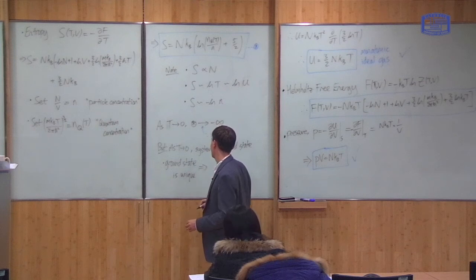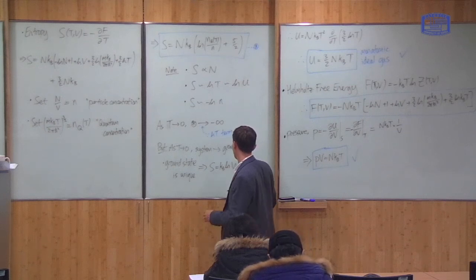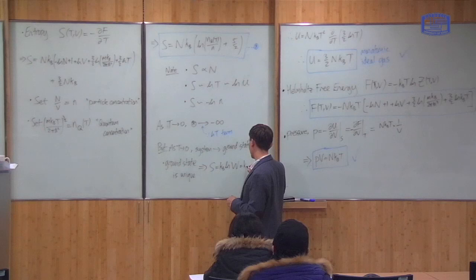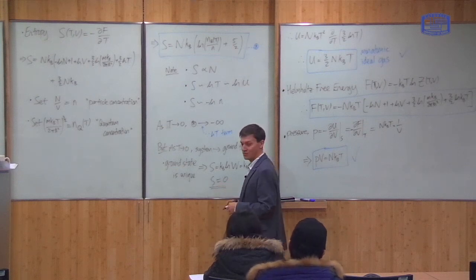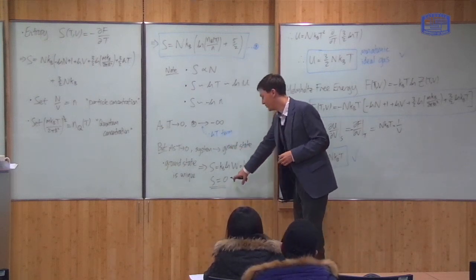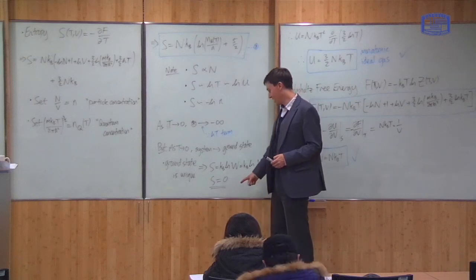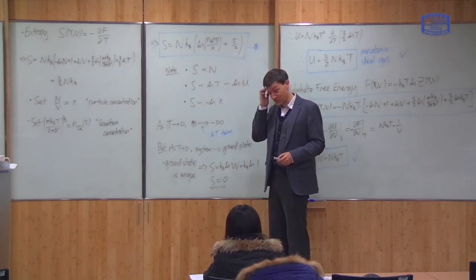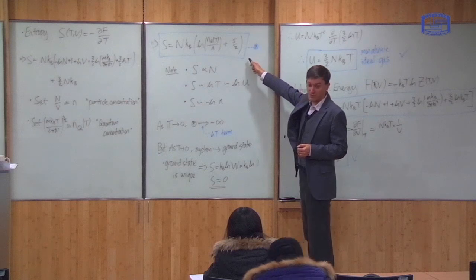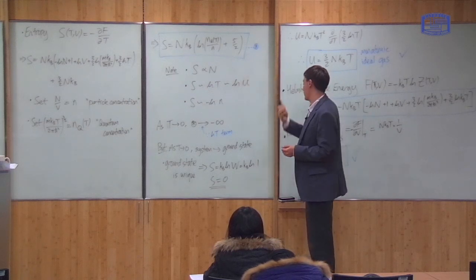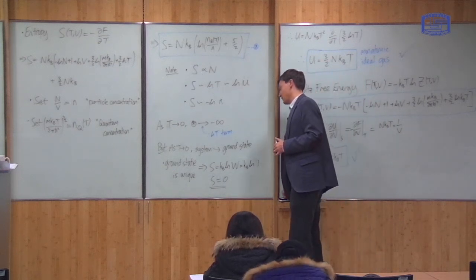The ground state is unique, so S = kB ln(1) = 0. This is generally true: ground states are almost always unique, and therefore the entropy of the ground state is almost always zero. So for virtually all systems at zero temperature, entropy should become zero. There is therefore a problem with this equation at low temperatures, but we already expected that — we made approximations assuming high temperature and that particles are in different energy levels.